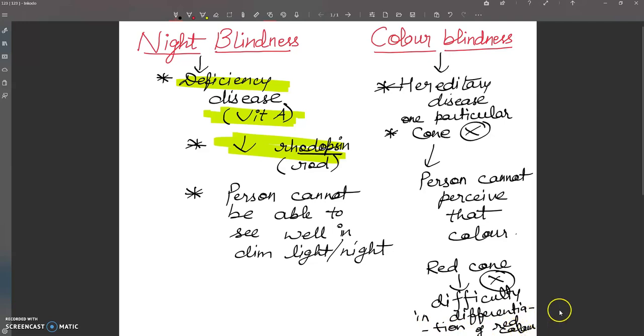So this is some comparative view, students. Sometimes students get confused about night blindness and color blindness, so what is the basic concept that differentiates them? The first point is that color blindness is a hereditary disease while night blindness is a deficiency disease. In color blindness, a particular cone cell will be absent.